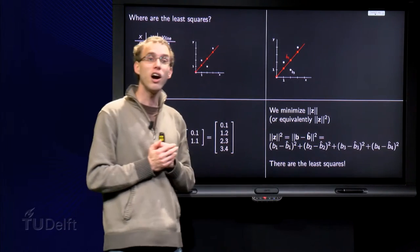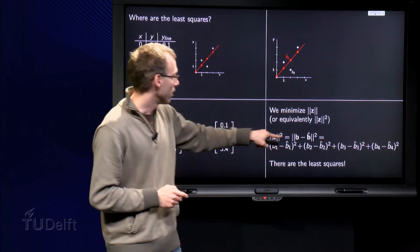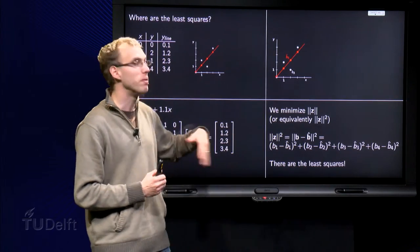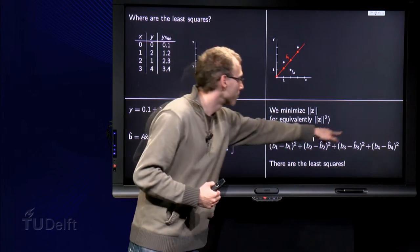So there are our least squares. We are actually minimizing the sum in this case of four squares.